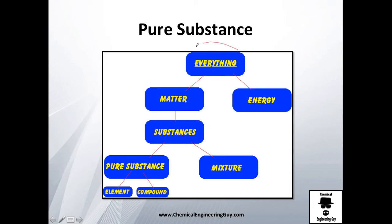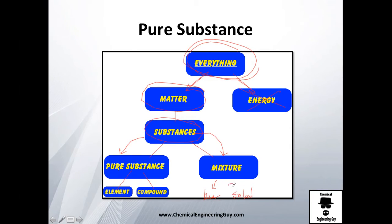Everything in the universe can be considered either mass or energy. Since we're speaking about substances and matter, we have substances which are either pure substances or a mixture — such as beer, salad, sand, or air, which are all mixtures. Pure substances include elements like O2, nitrogen, copper, and aluminum, as well as compounds like water (H2O), methane, and carbon dioxide — compounds containing at least two different elements.